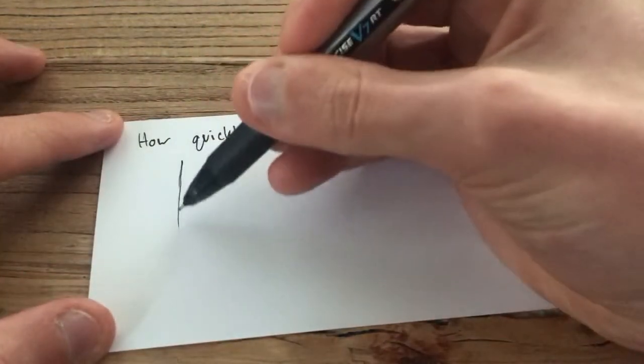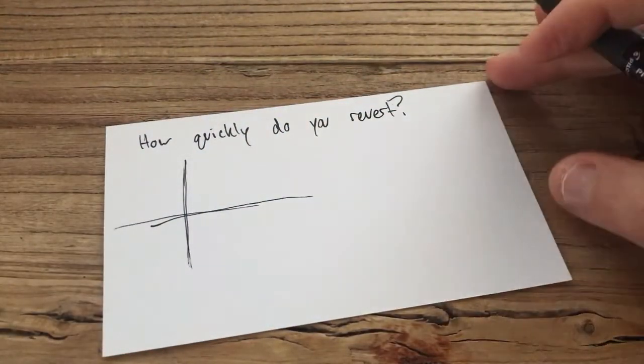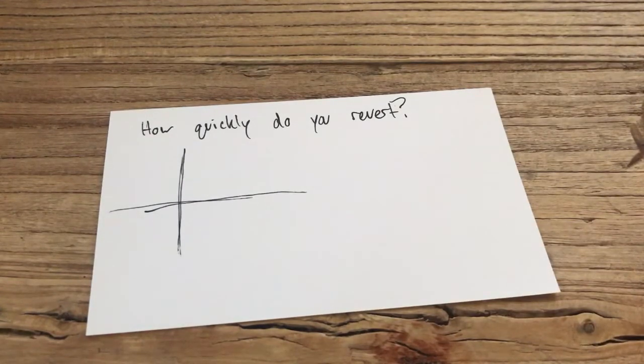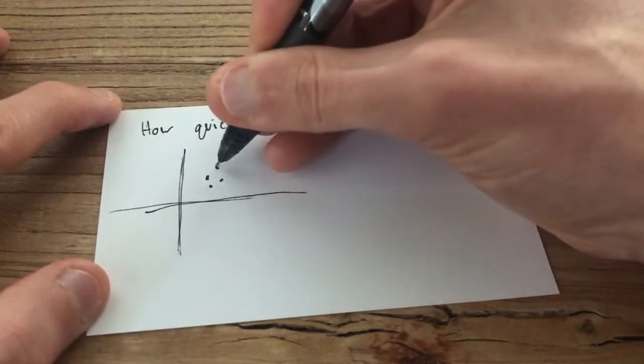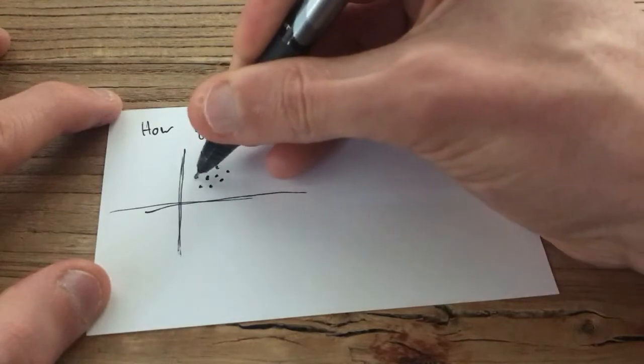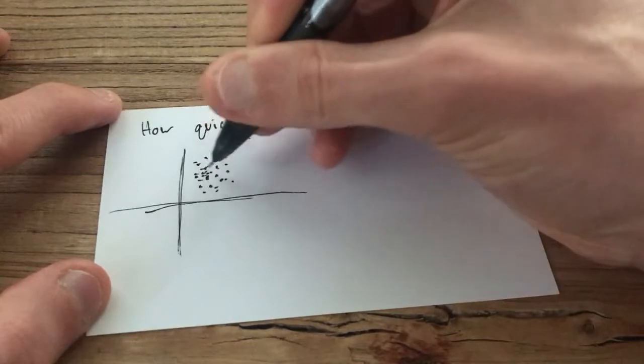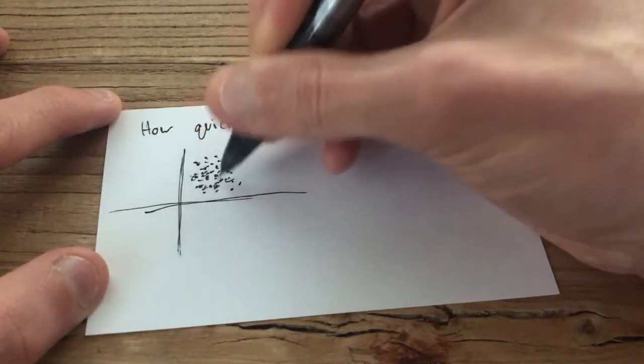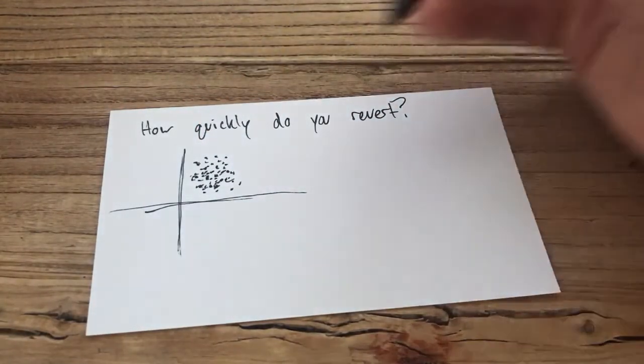Because what's happening when we go into embodiment work is we are essentially adjusting what's known as your self-image. We're adjusting the way that you picture yourself in the world. Because you as you are now emerge out of the sum total of all of your life experiences. Every event, every interaction, every experience you've ever had makes up the soil of your being in some sense.